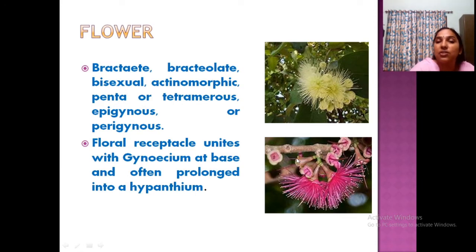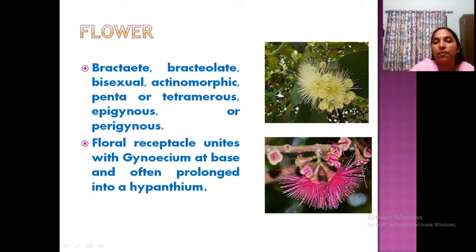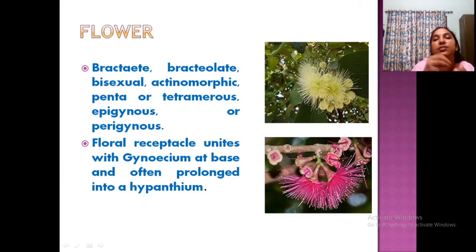Flowers are bractate and bracteolate, bisexual and actinomorphic. They may be pentamerous or tetramerous, and both epigynous and perigynous conditions occur. The receptacle unites with the gynoecium to form a hypanthium — a cup-like structure. This hypanthium is formed by the receptacle fusing with the gynoecium, and the floral parts arise from inside this structure. When it falls off it retains that cup-like appearance.